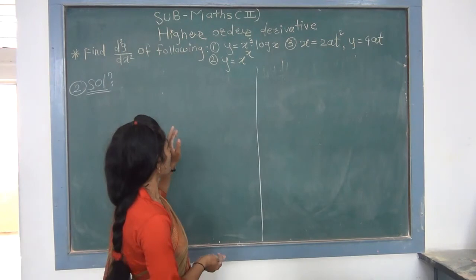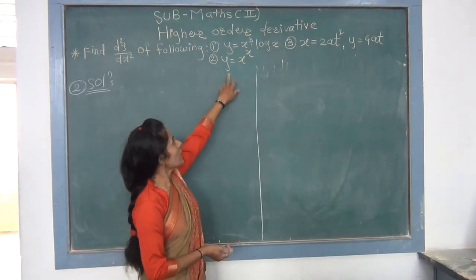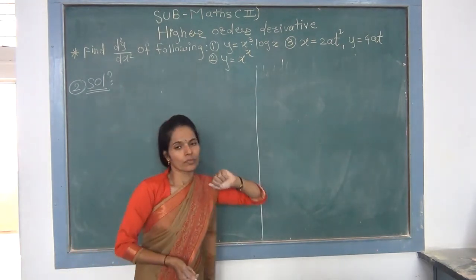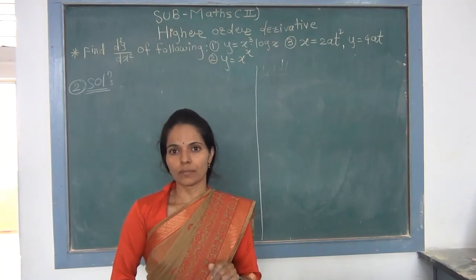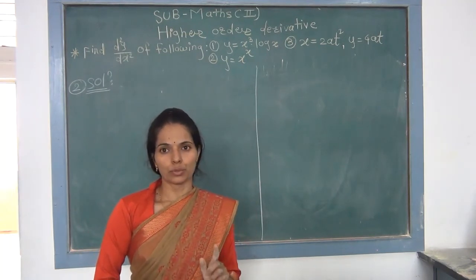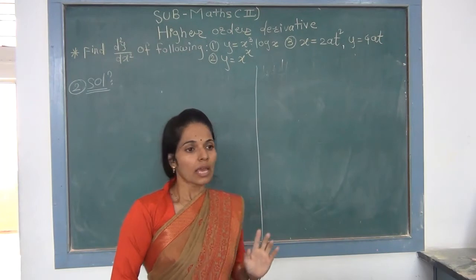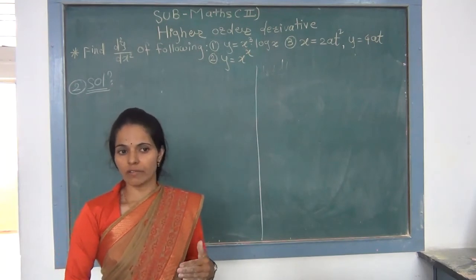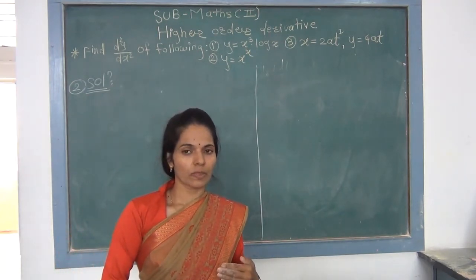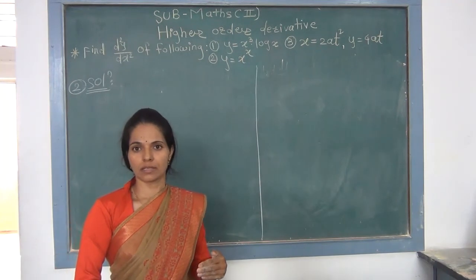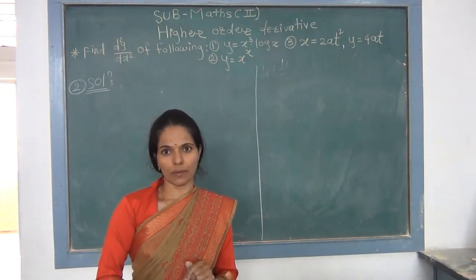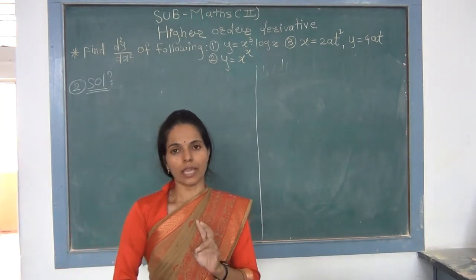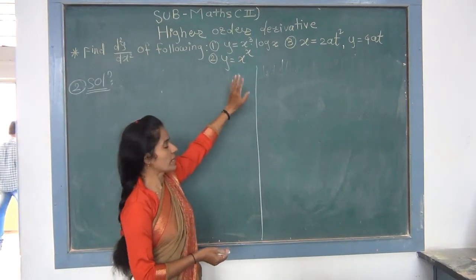To find the second order derivative, differentiate dy/dx again with respect to x. So d²y/dx² is the derivative of x^x·(1 + log(x)). Again two functions in multiplication, so apply the product rule: x^x as it is, times derivative of (1 + log(x)) — derivative of 1 is 0, derivative of log(x) is 1/x — plus (1 + log(x)) as it is, times derivative of x^x which is x^x·(1 + log(x)) from equation 2.